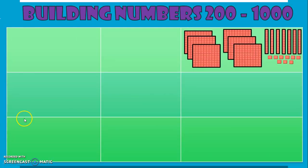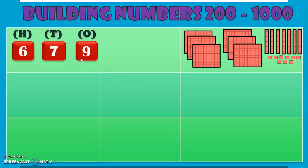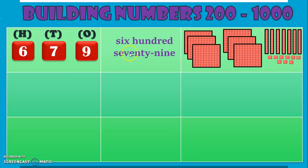What do we have here? 1, 2, 3, 4, 5, 6 — 6 blocks of 100s. And how many 10s? 1, 2, 3, 4, 5, 6, 7 — 7 tens. And how many 1s? 1, 2, 3, 4, 5, 6, 7, 8, and 9. So we have 6 hundreds, 7 tens, and 9 ones, making the number 679. Because 6 is in the 100s place, 7 tens in the 10s place, and 9 in the 1s place. 7 tens makes 70, so we have the number 679.